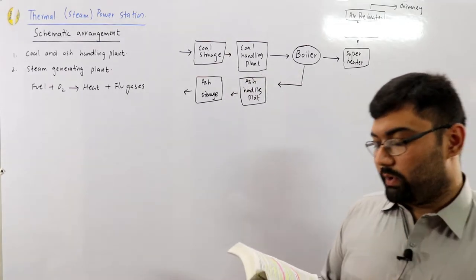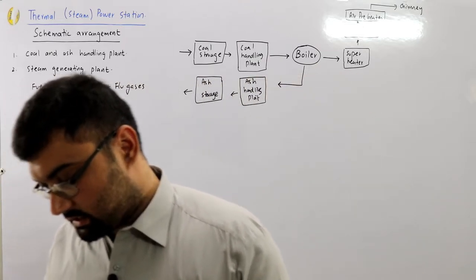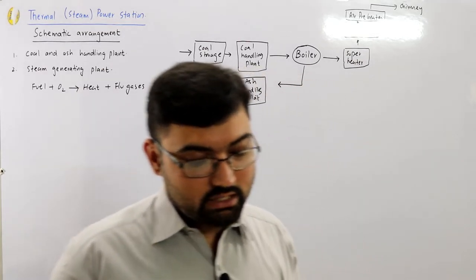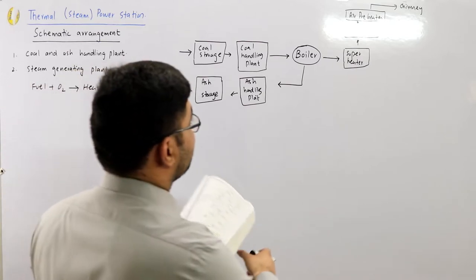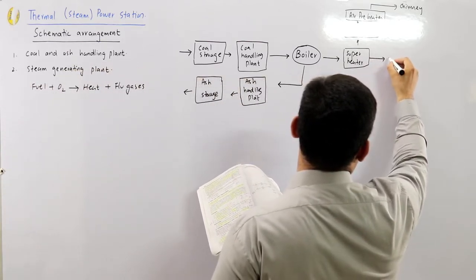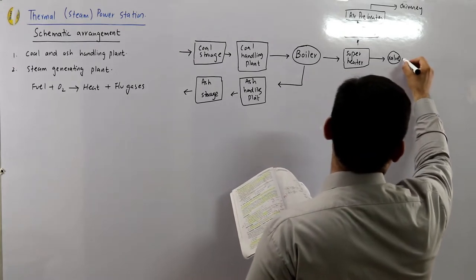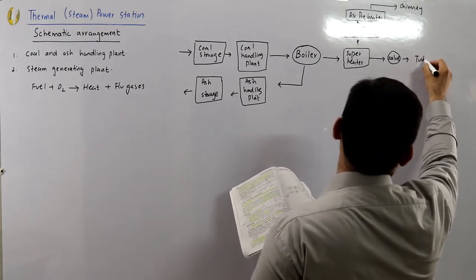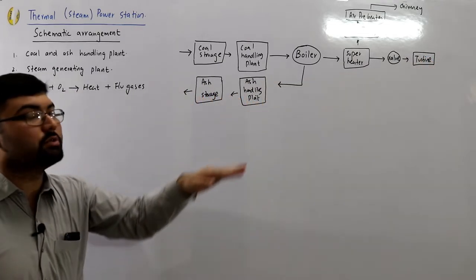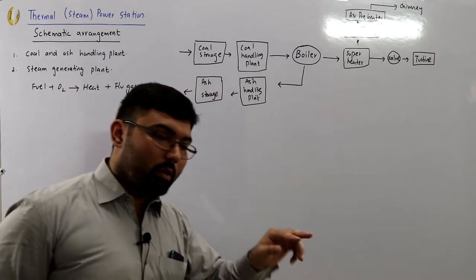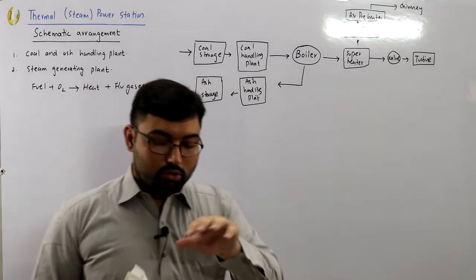The superheated steam from the superheater is fed to the steam turbine through the main valve. This valve controls the flow of steam to the turbine depending on the load — higher load means more steam is needed, lower load means the valve is closed down to reduce steam flow.